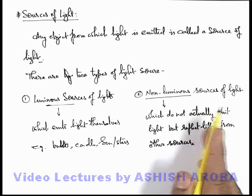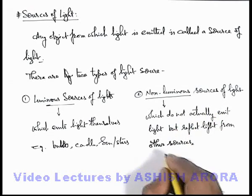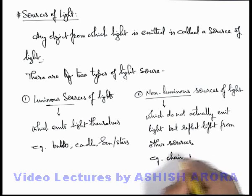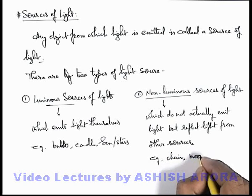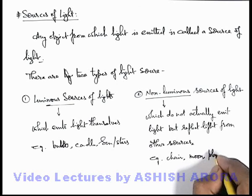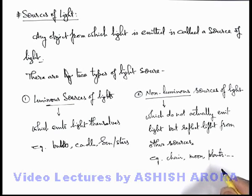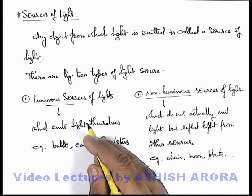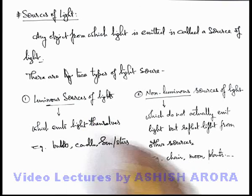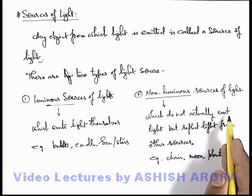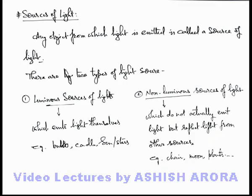So these are called sources of light but non-luminous. For example, a chair in a room, the moon, plants in our surrounding, or various different kinds of objects in our day-to-day surroundings which are visible when other luminous sources of light are present. But if luminous sources of light are switched off, these are not visible because no light is falling onto these objects. So these are called non-luminous sources of light.